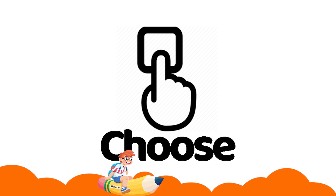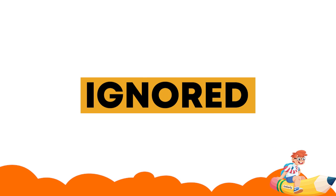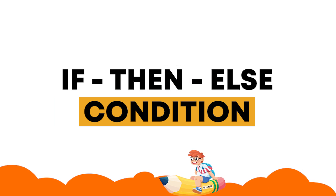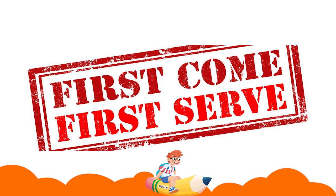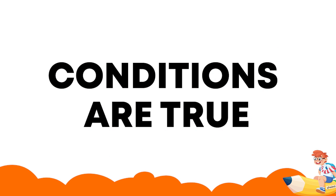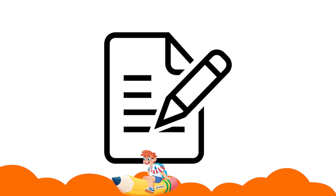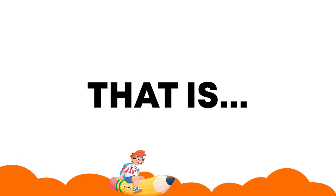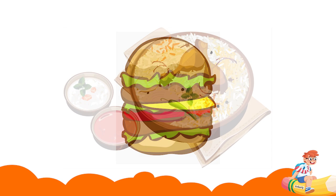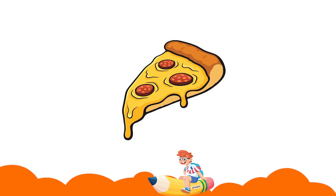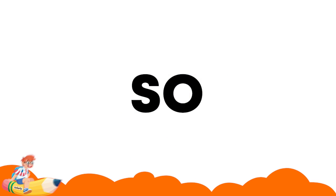If one option is chosen, then all the others are ignored. We can say that the if-then-else condition works based on a first-come-first-serve basis. Even if all the conditions are true, the first condition gets evaluated. That means even though you like pizza, burger, and biryani, if you choose pizza first, you will have pizza.